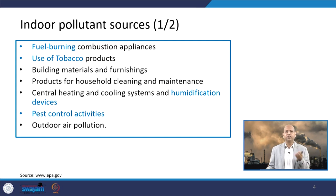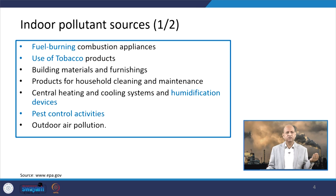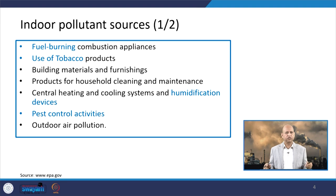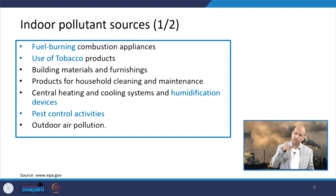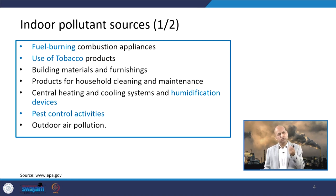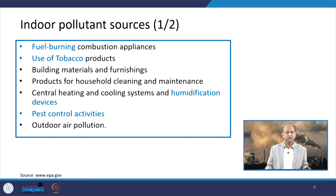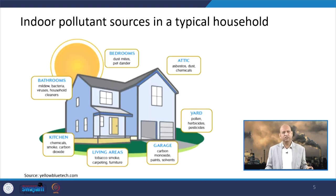In summary, the sources include fuel burning and combustion appliances, use of tobacco products, building materials and furnaces, products for household cleaning and maintenance, central heating and cooling systems and humidification devices. Pest control activities involve chemicals that get emitted into the air, and outdoor air pollution can also come inside the building.